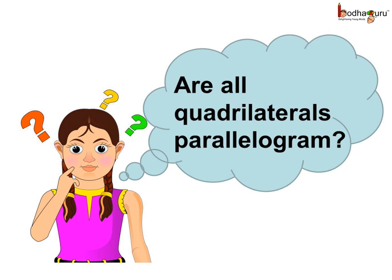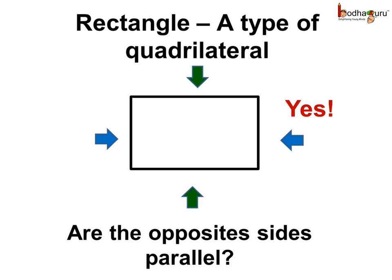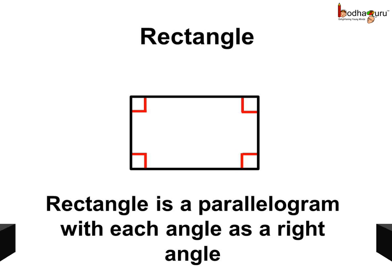Let us see, are all the quadrilaterals parallelogram? This is a rectangle, which is a type of a quadrilateral, as it has four sides. Now, let us see, in a rectangle, are the opposite sides parallel? Yes, they are. So, we can say a rectangle is a parallelogram with each angle as a right angle.